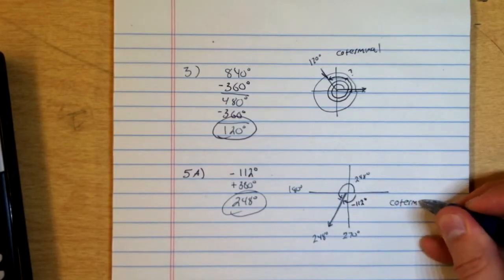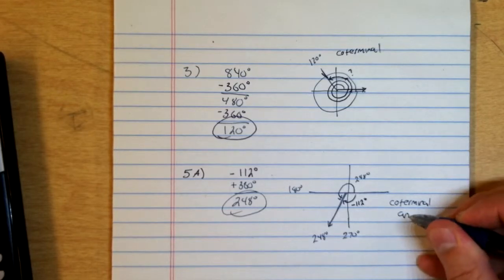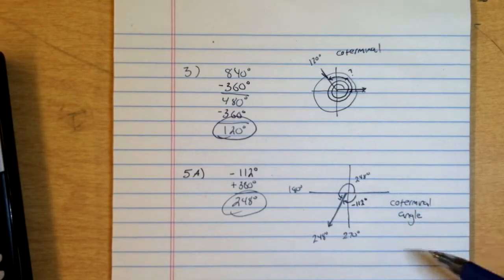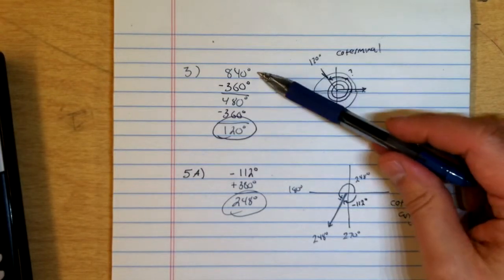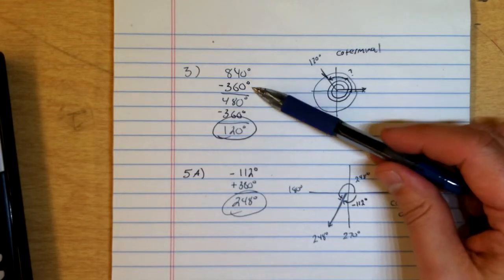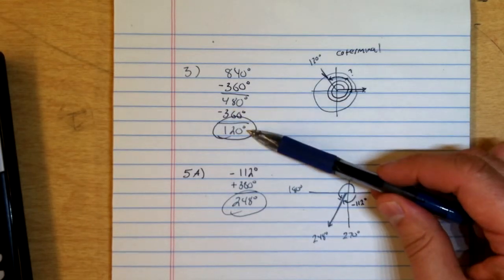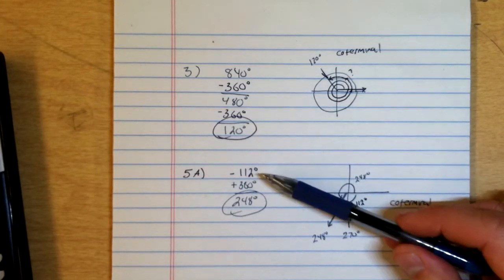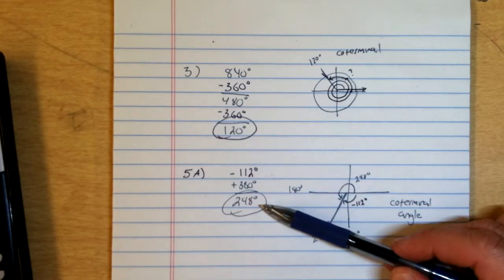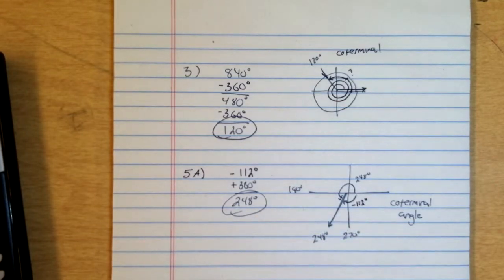So our process for finding coterminal angles is simply if I have a large positive number, I keep subtracting 360 until I get the smallest possible positive number. And if I have a negative number, I keep adding 360 until I get a positive number. So that's how we do number 3, 4, and 5.